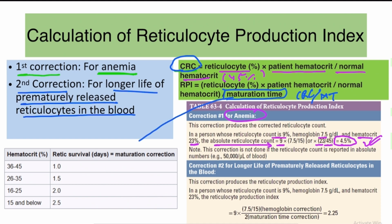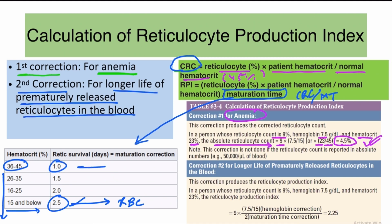The maturation time of reticulocytes increases as hematocrit decreases. If the hematocrit is 15 or below, it takes around 2.5 days for reticulocytes to mature into RBCs. If the hematocrit is between 36 and 45, they take around 1 day to mature. We use the appropriate maturation factor based on the patient's hematocrit level, though for ease, a maturation correction of 2 can be used.